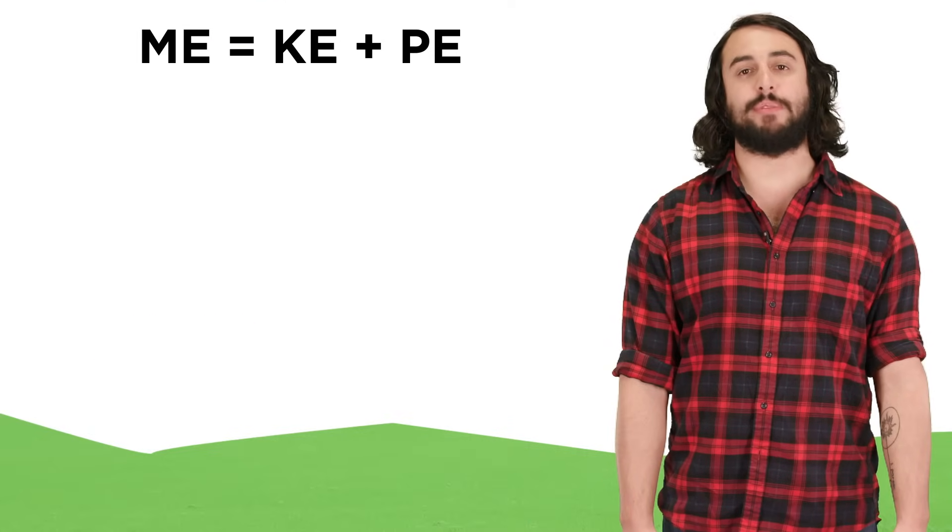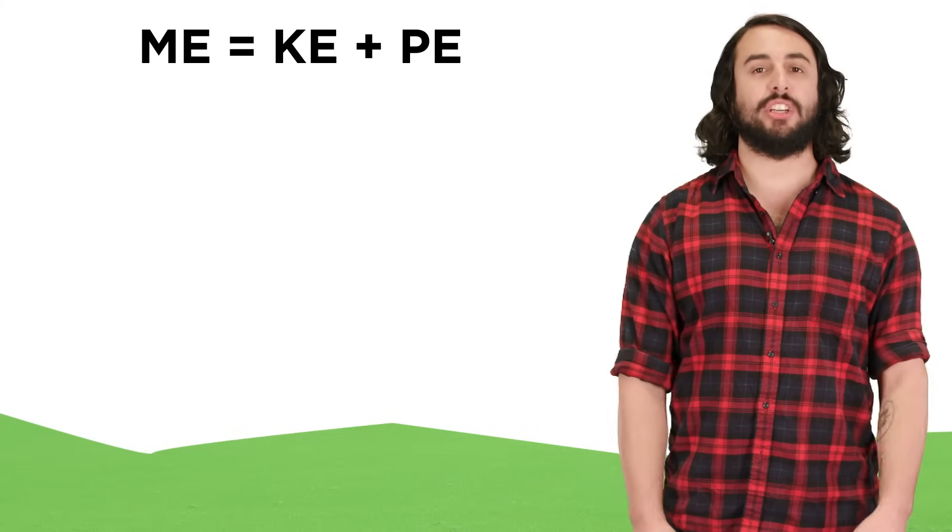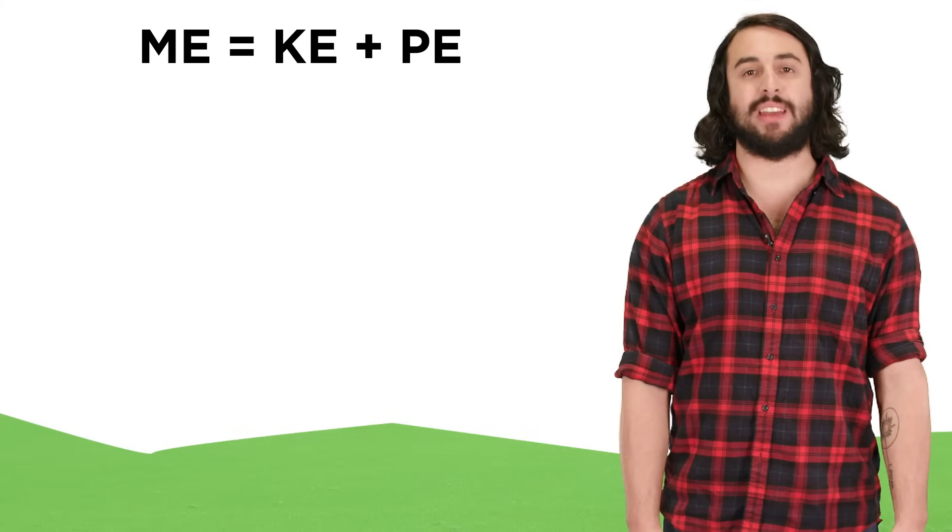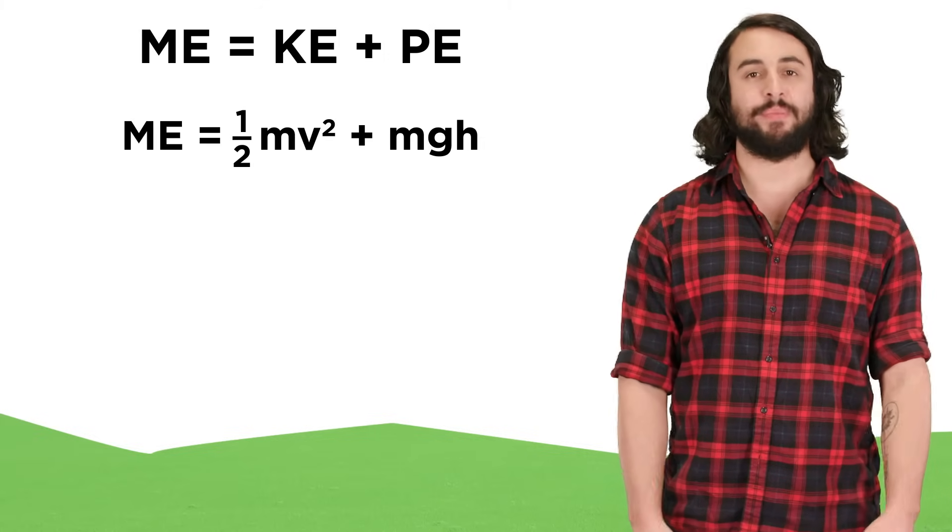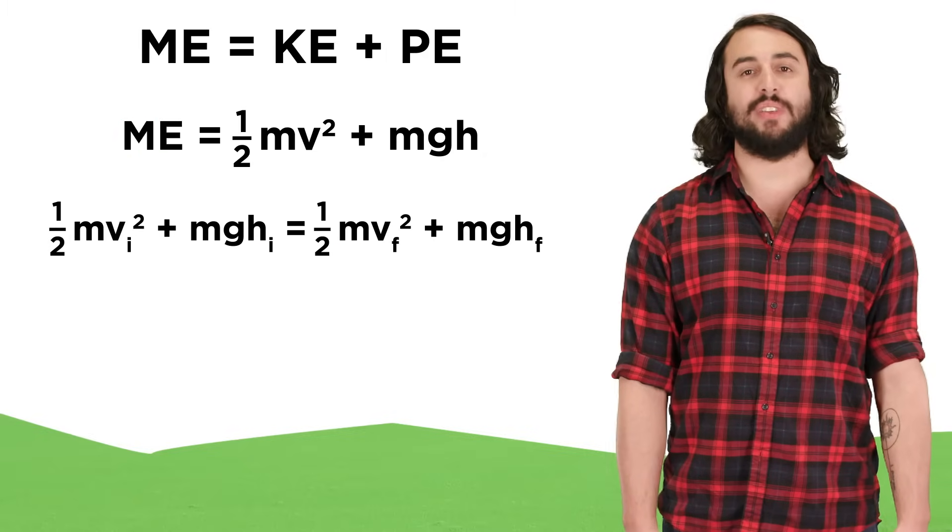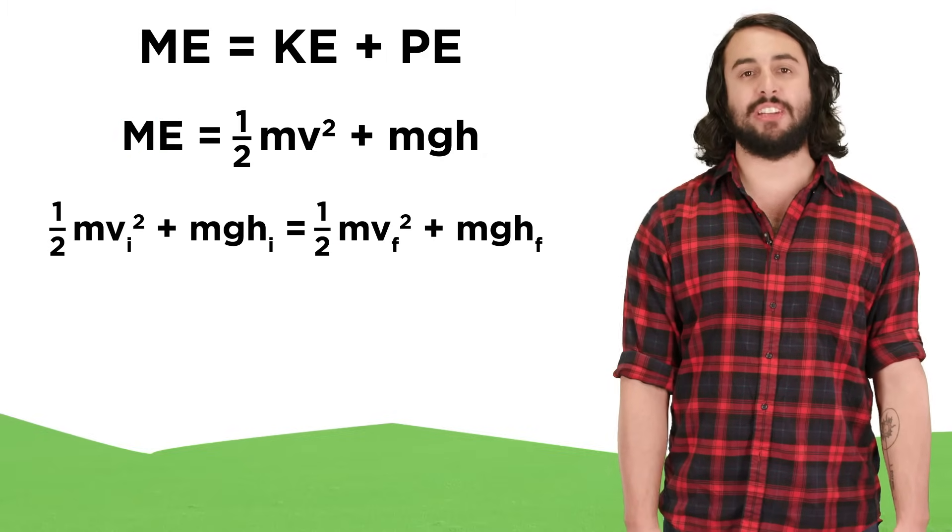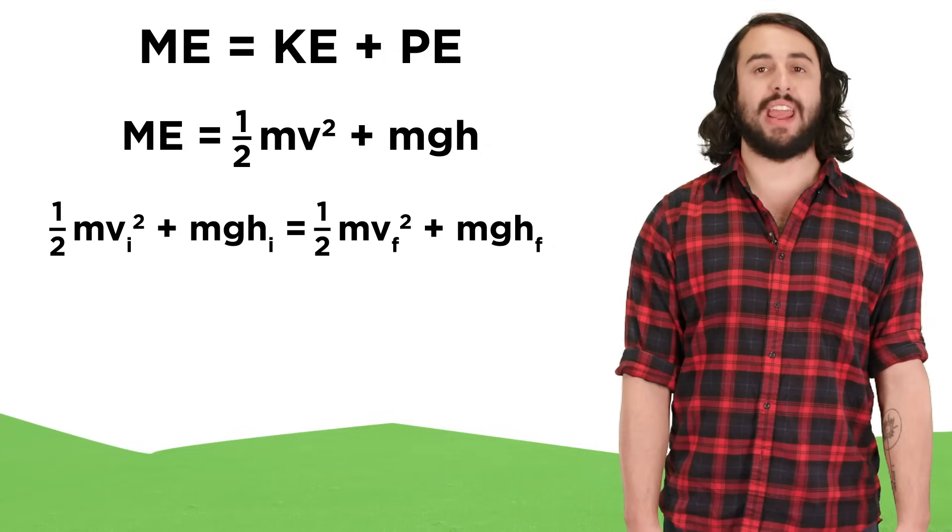This concept can be described mathematically by the following equation. If mechanical energy is the sum of kinetic energy and potential energy, which are in turn represented by these expressions, and this value is conserved, then 1/2 mv² initial plus mgh initial will be equal to 1/2 mv² final plus mgh final.